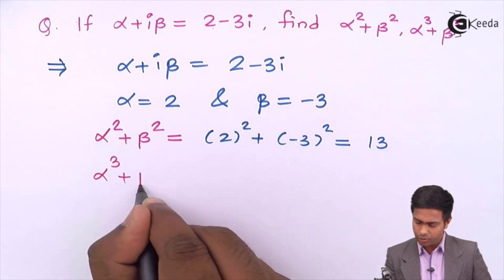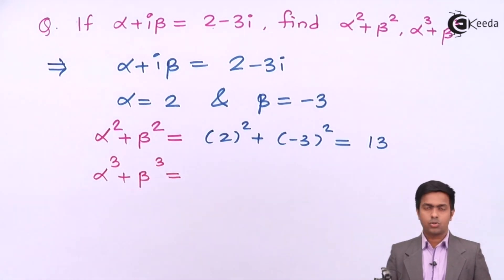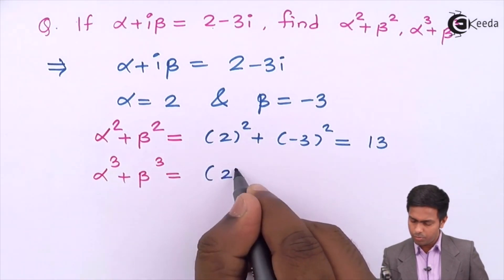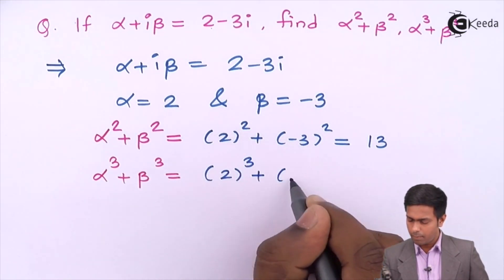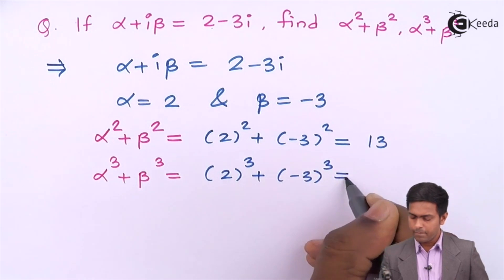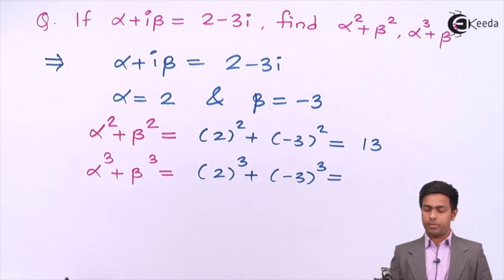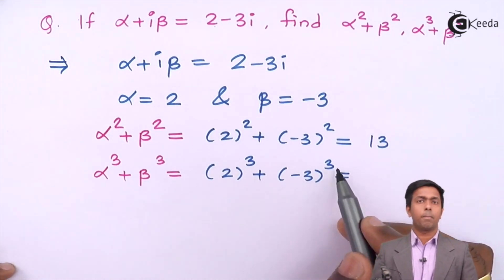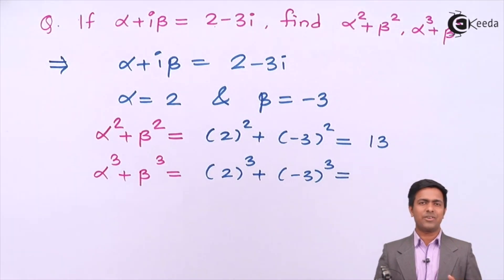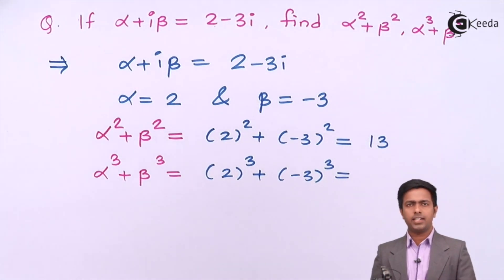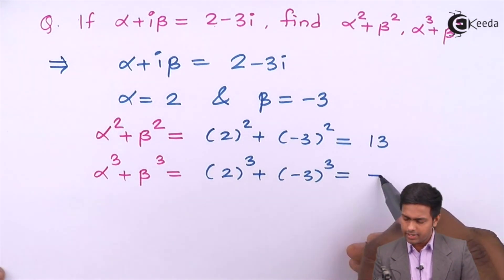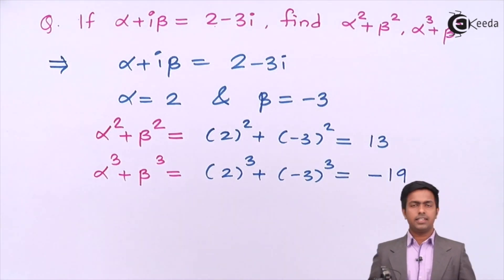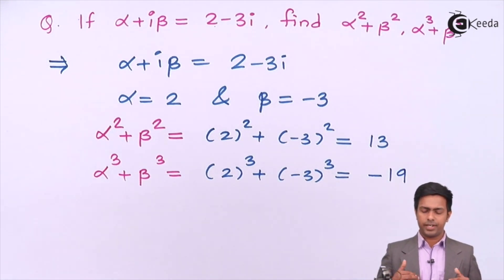The next expression is alpha cubed plus beta cubed, which equals 2 cubed plus minus 3 cubed. So 2 cubed is 8 and minus 3 cubed is minus 27, giving us 8 minus 27, which equals minus 19.